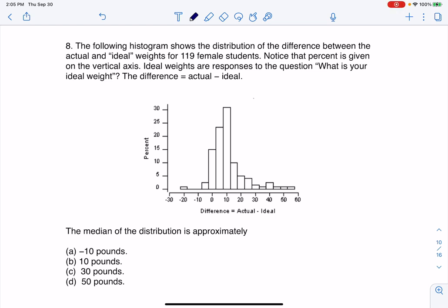Hey everyone, let's take a look at our next multiple choice question. The following histogram shows the distribution of the difference between the actual and ideal weights for 119 female students.